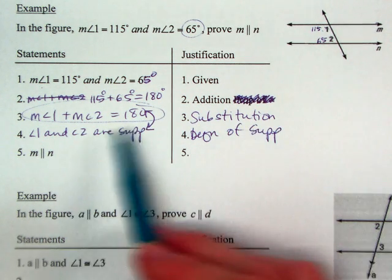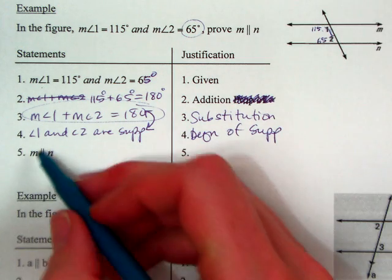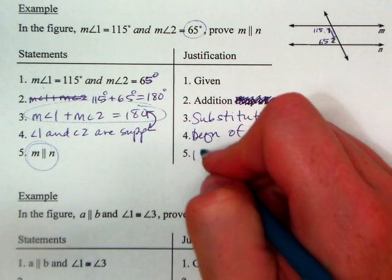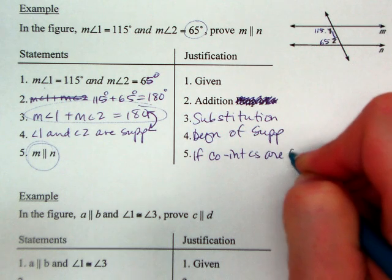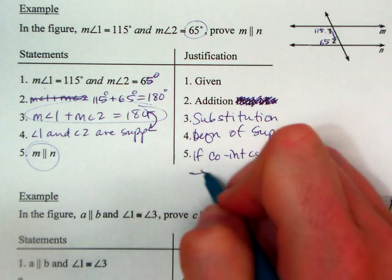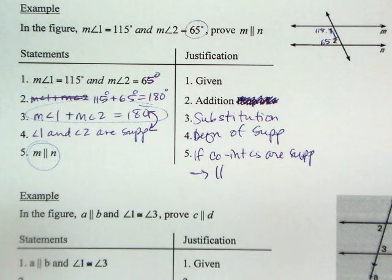And now that I have 1 and 2 being supplementary, I can say the lines are parallel. Because if co-interior angles are supplementary, then the lines are parallel. So it's one of the four you have on your sheet. Remember, you're aiming for one of those four because you're trying to prove lines are parallel.